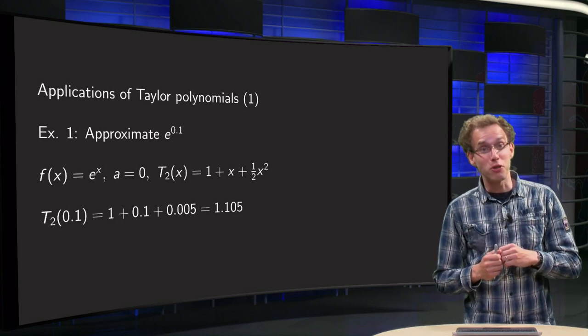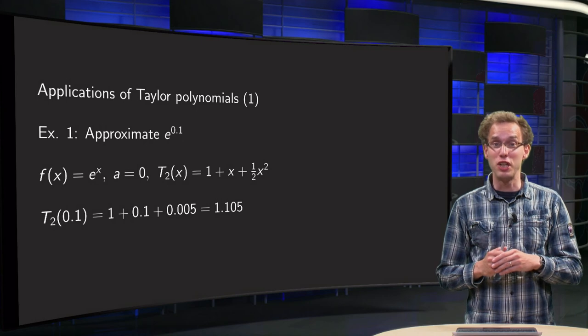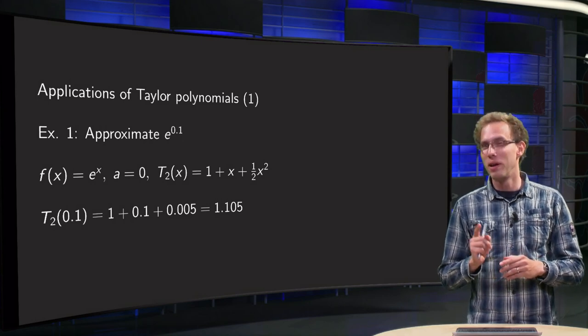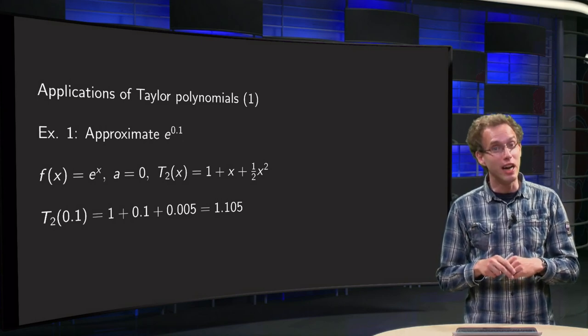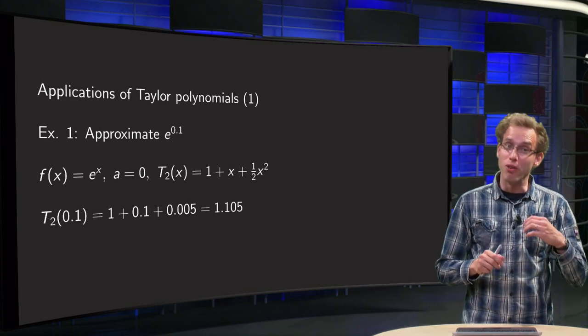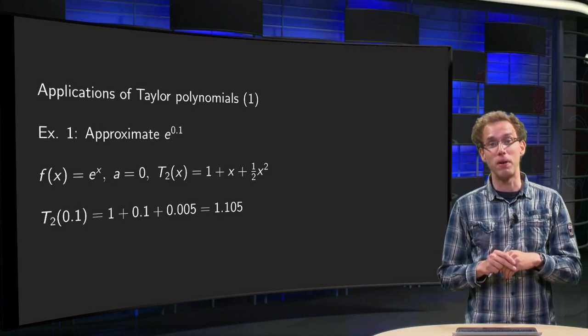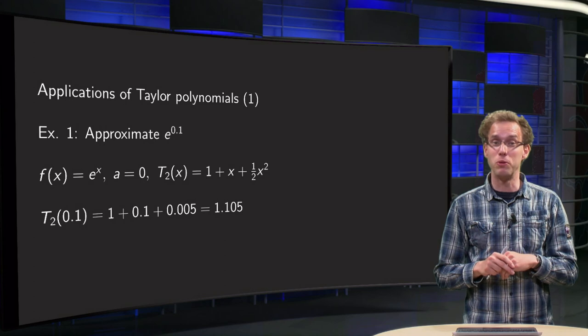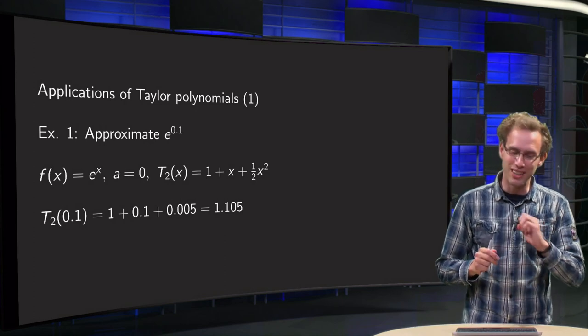How does your calculator compute e to the power 0.1? It uses Taylor polynomials, as you will see in this video, and we will also do two examples where we apply Taylor polynomials to compute limits very fast. Let's take a look.